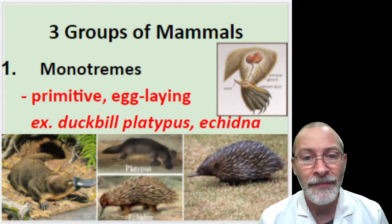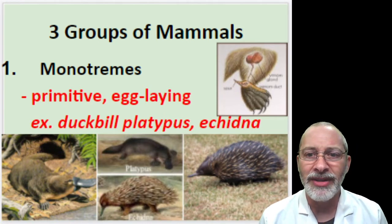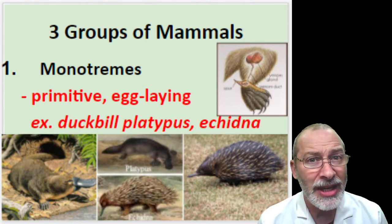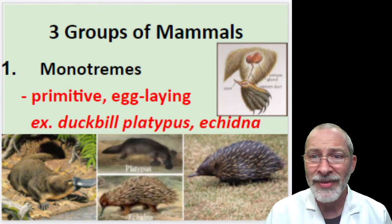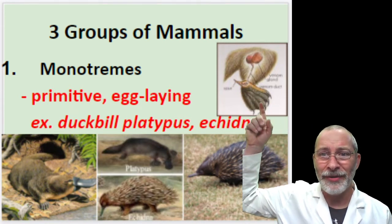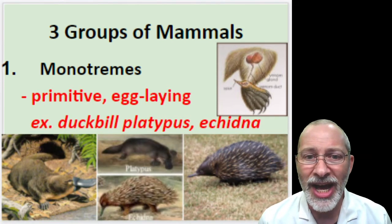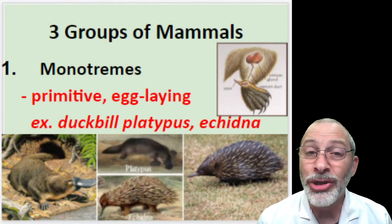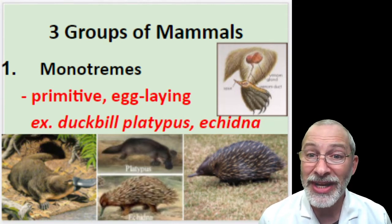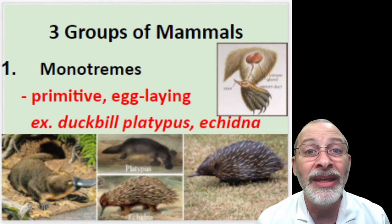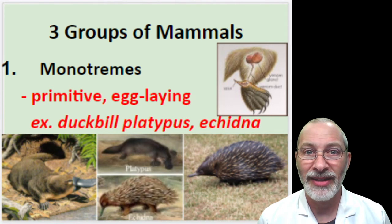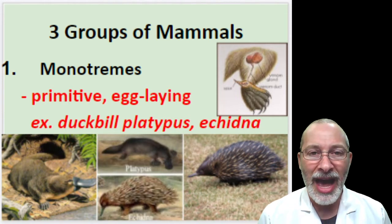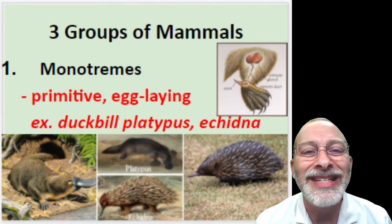Some folks consider monotremes transitional species that may have some similar characteristics of birds as well as mammals. Among them we have the duckbill platypus and the echidna — very interesting and unique organisms. Looking at this picture, you can see the hind leg of the duckbill platypus. Another interesting characteristic: the platypus is the only venomous mammal in the world — it actually produces venom like a snake does.